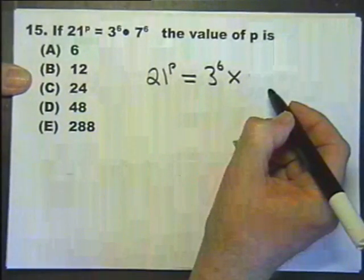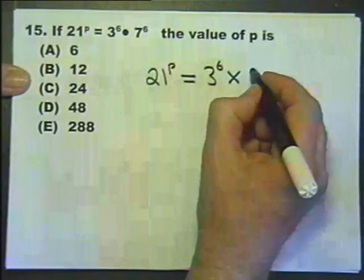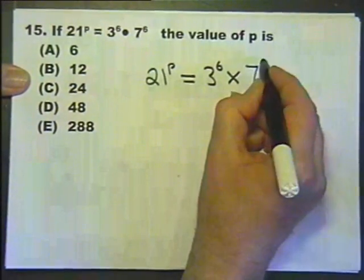That dot is the American way of doing multiplication. We don't do that, but you do. It's multiplied by 7 raised to the power of 6.